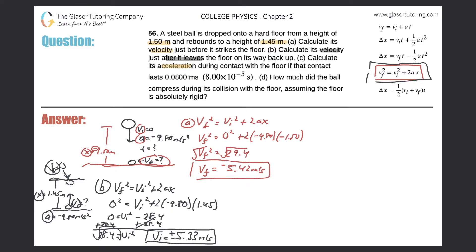Now let's move on to letter C: calculate its acceleration during contact with the floor, if that contact lasts 0.08 milliseconds, or 8 times 10 to the minus 5 seconds. We can use the basic acceleration formula: acceleration equals change in velocity divided by change in time, where change in velocity is the final velocity minus the initial velocity, divided by the change in time.